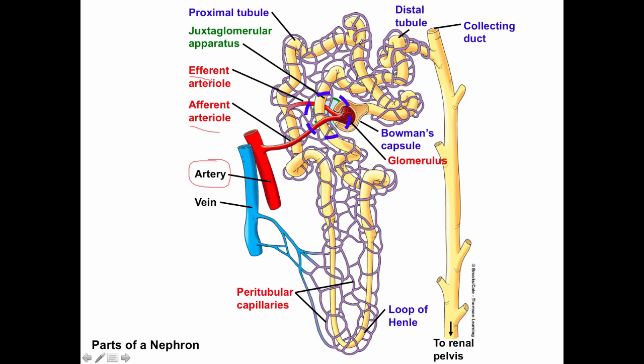The peritubular capillaries are represented as purple netting surrounding the rest of the nephron. Just like every other capillary, they are designed for exchange. This netting wraps around the nephron because the composition of the urine moving through the tubule is adjusted by the movement of substances back and forth between the peritubular capillaries and the tubule.